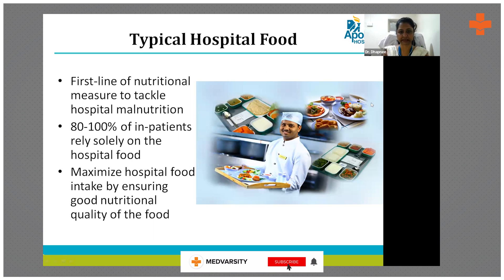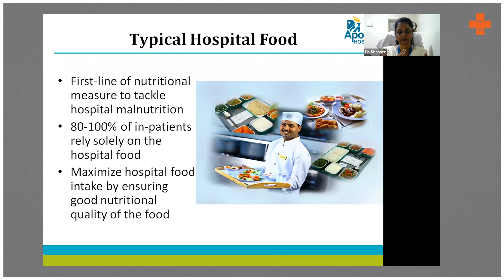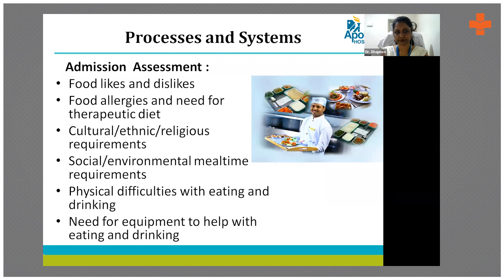When we talk about oral diet, a typical hospital diet is the first line of nutritional measure to tackle hospital malnutrition. Eighty to one hundred percent of inpatients solely depend on hospital diet, and it always serves as a model for patients to follow at home. During admission, patients' likes and dislikes are noted, food allergies are recorded — a very important component — and drug-nutrient interactions are reviewed by the dietitian.